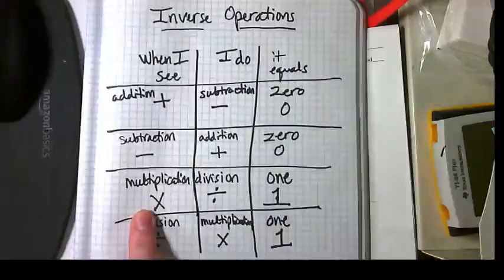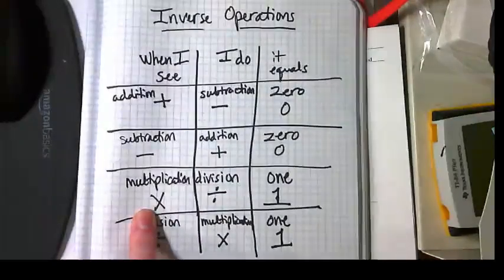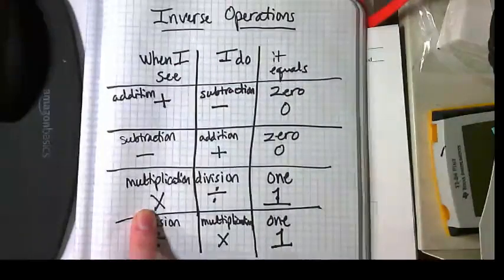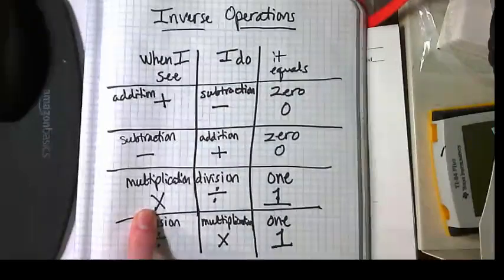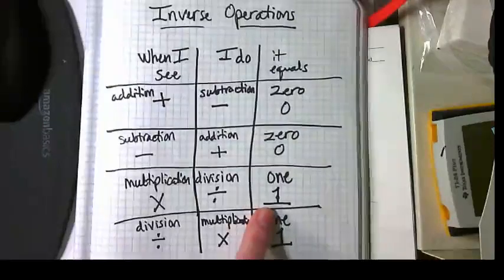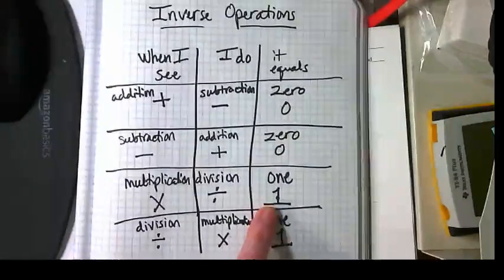But then we switched over and we did exactly one problem before you all left Friday to show that with multiplication and division inverse problems, when we're solving equations, we're not trying to get to a zero, we're trying to get to a one. We're trying to make an invisible one.